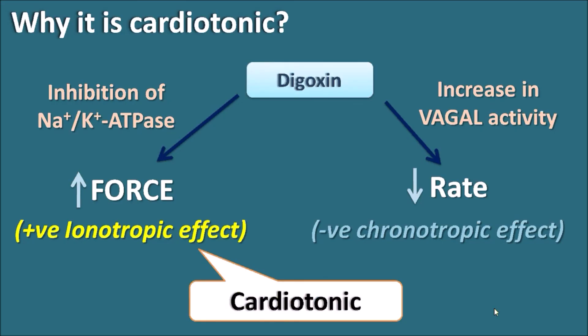As Digoxin increases the force of contraction, it increases cardiac output and blood supply to the systemic organs. That is why it can be used in the treatment of heart failure. That concludes the mechanism of Digoxin and how it is used in the treatment of heart failure.